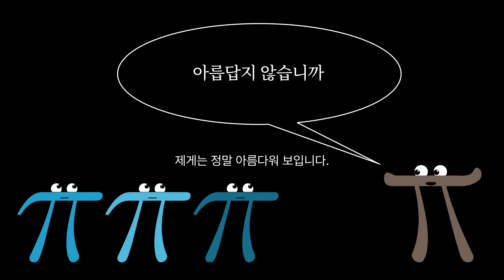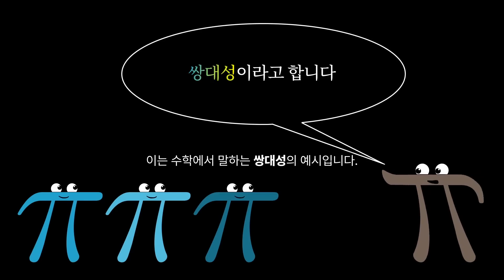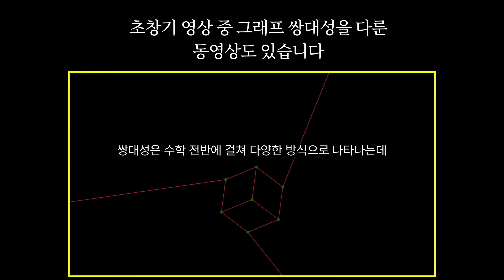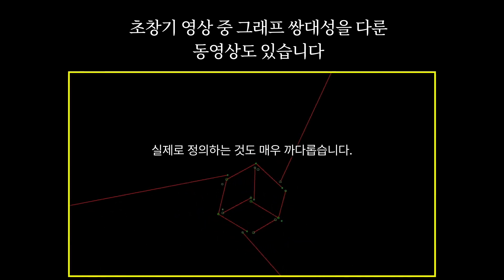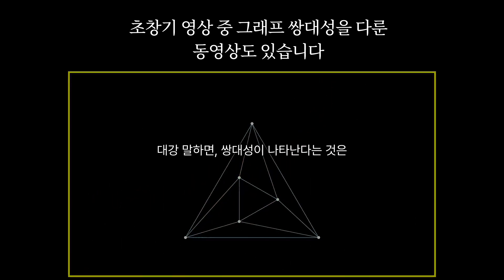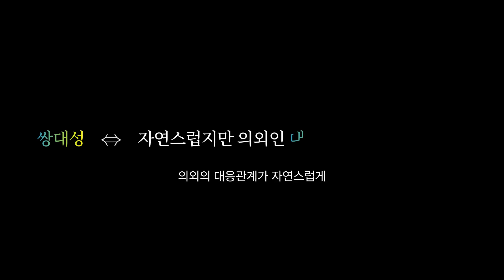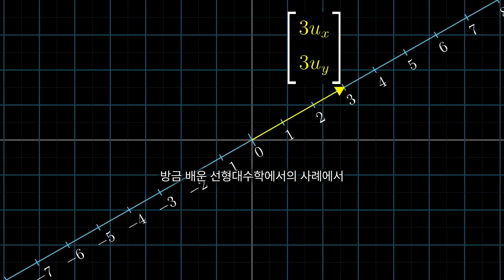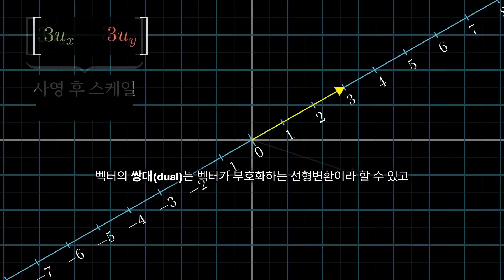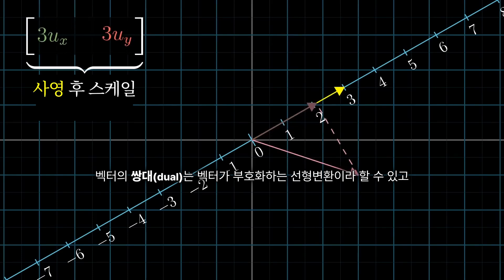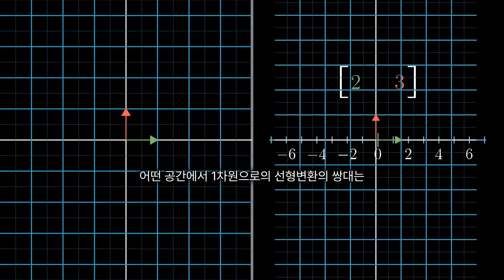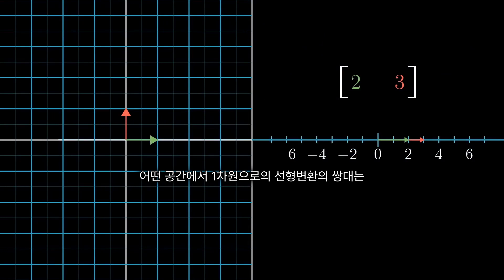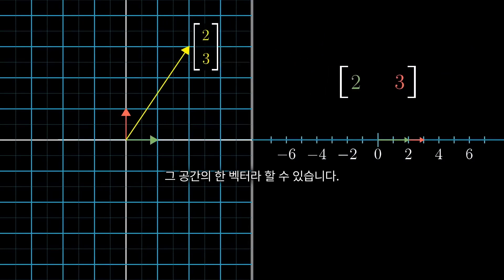To me, this is utterly beautiful. It's an example of something in math called duality. Duality shows up in many different ways and forms throughout math, and it's super tricky to actually define. Loosely speaking, it refers to situations where you have a natural but surprising correspondence between two types of mathematical thing. For the linear algebra case that you just learned about, you'd say that the dual of a vector is the linear transformation that it encodes, and the dual of a linear transformation from some space to one dimension is a certain vector in that space.